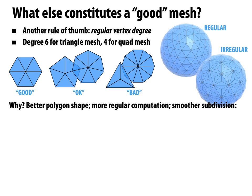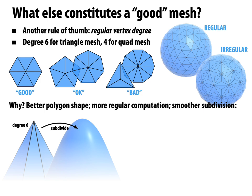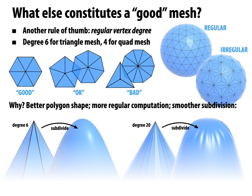Regular degree also helps with subdivision. Taking a degree-6 vertex and subdividing all the way to the limit surface gives a really nice smooth result. Starting with a really high degree vertex — say degree 20 — and running subdivision often produces nasty artifacts like wrinkles instead of a smooth bump, resulting in shading artifacts where normals and reflections look wrong. An important mathematical fact is that in general you cannot have regular vertex degree everywhere — there's no way to tile a sphere with all degree-6 triangles.